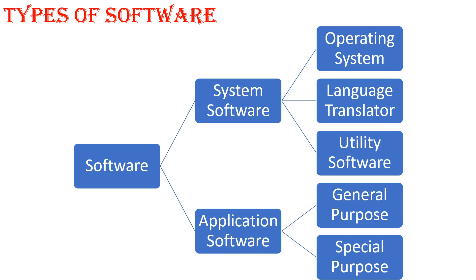System software and application software. System software is further subdivided into three types: operating system, language translator and utility software. Application software is further subdivided into two types: general purpose and special purpose.